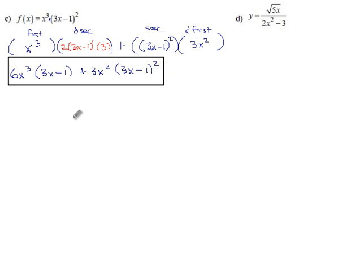The next one is 5x to the 1 half—we need that power to be a number so we can power rule it—and then we have 2x squared minus 3. Okay, so this is a quotient, of course.